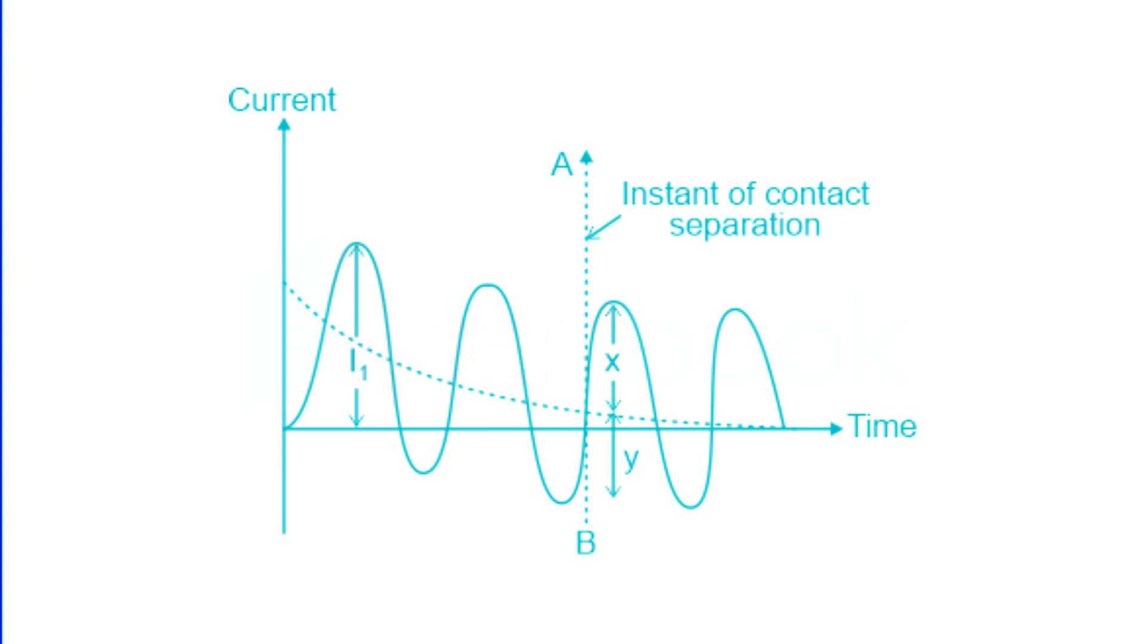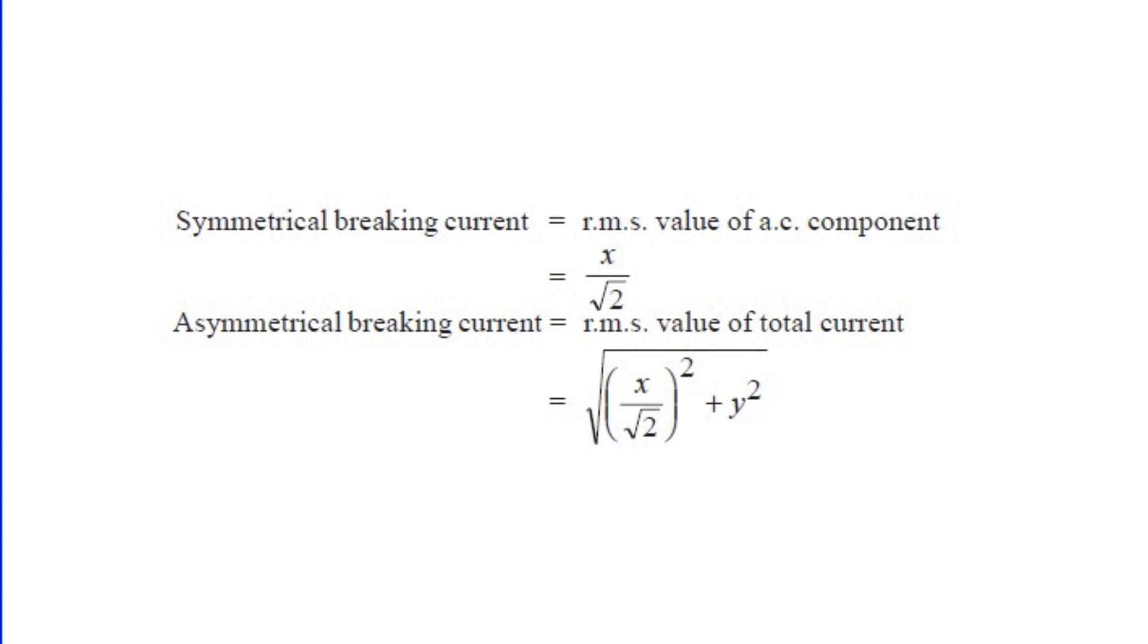At this point, let the symmetric component of the current be x ampere and the DC component be y ampere. Therefore, the symmetrical breaking current is equal to the RMS value of the AC component, that is x by root 2, and asymmetrical breaking current is equal to the RMS value of the total current.